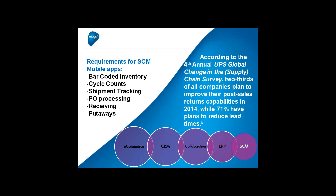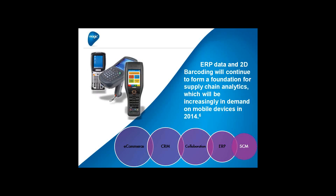In supply chain management, mobile app requirements include barcoded inventory, cycle counts, shipment tracking, PO processing, and receiving and put-aways. According to the fourth annual UPS Global Change in the Supply Chain Survey, two-thirds of all companies plan to improve their post-sales returns capabilities in 2014, while 71% have plans to reduce lead times. ERP data and 2D barcoding will form a foundation for supply chain analytics, which will continue to be increasingly in demand on mobile devices.